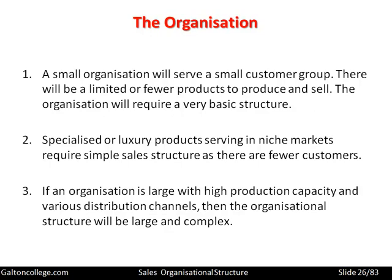If an organization is large with high production capacity and various distribution channels, then the organizational structure will be large and complex. If a company is producing something with a mass market — a particular type of confectionery or a popular home product — then chances are it will have a large distribution complex and a quite complex sales organization to support the markets and the selling activities within those markets. Large organizations with high capacity selling popular items tend to be more complex.